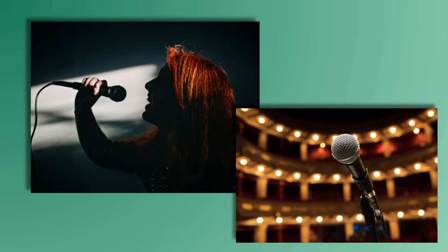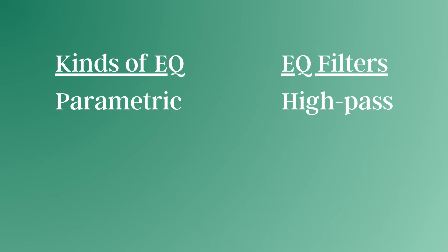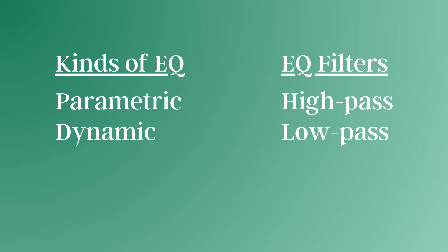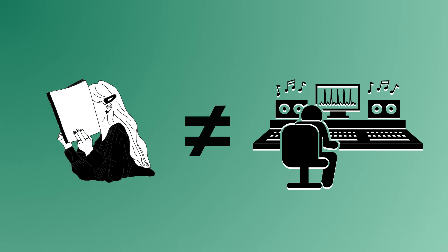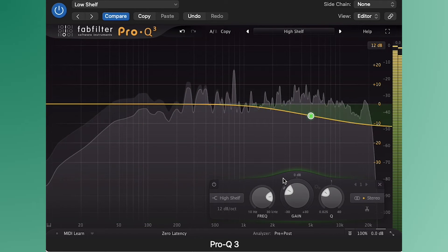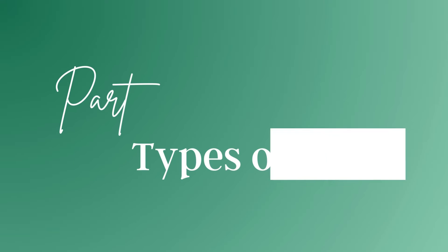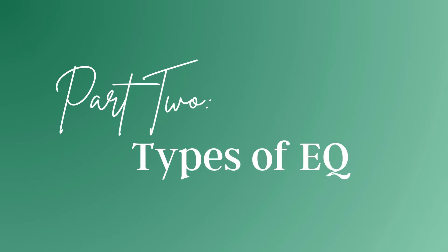In a more practical sense, EQ can also be used to compensate for imperfections in a room's acoustics, or in a live setting, to help prevent feedback through a microphone. There are different kinds of EQ, different methods of EQ, and different filters used in EQ. I'm not a sound engineer, so I can't give you tips on how to make an acoustic guitar pop in your mix, but I will show you how EQ itself works. First, I'm going to explain the most basic EQ terminology.